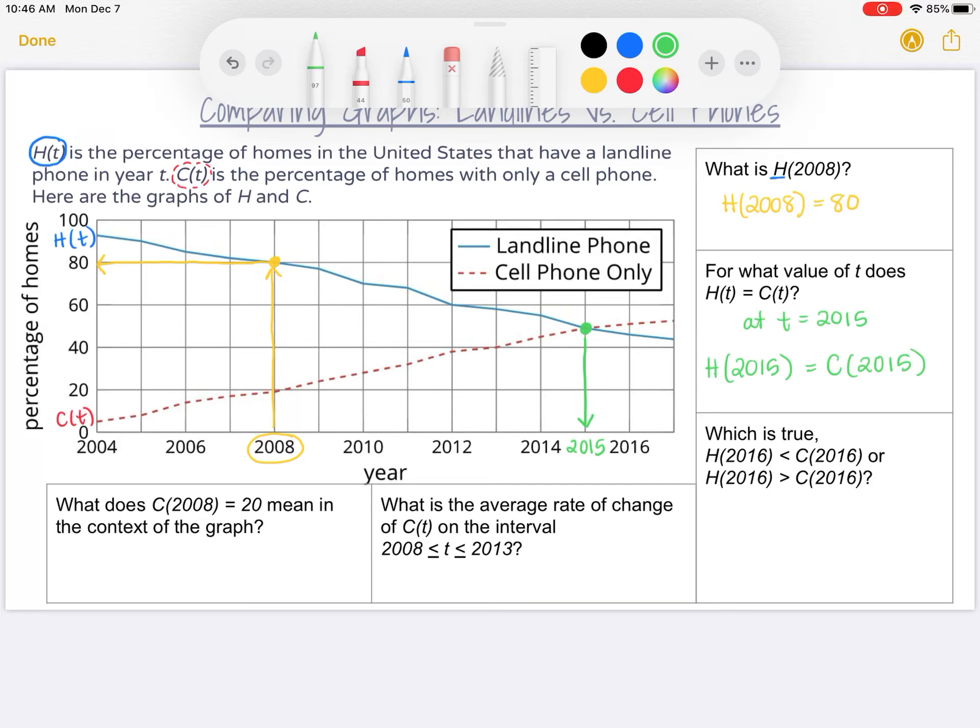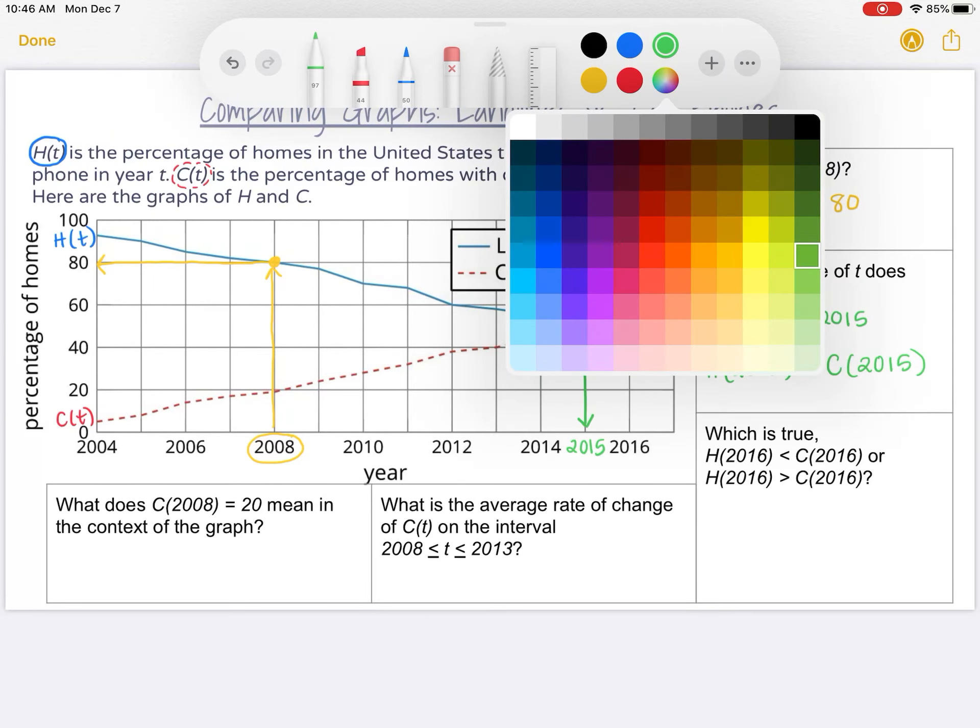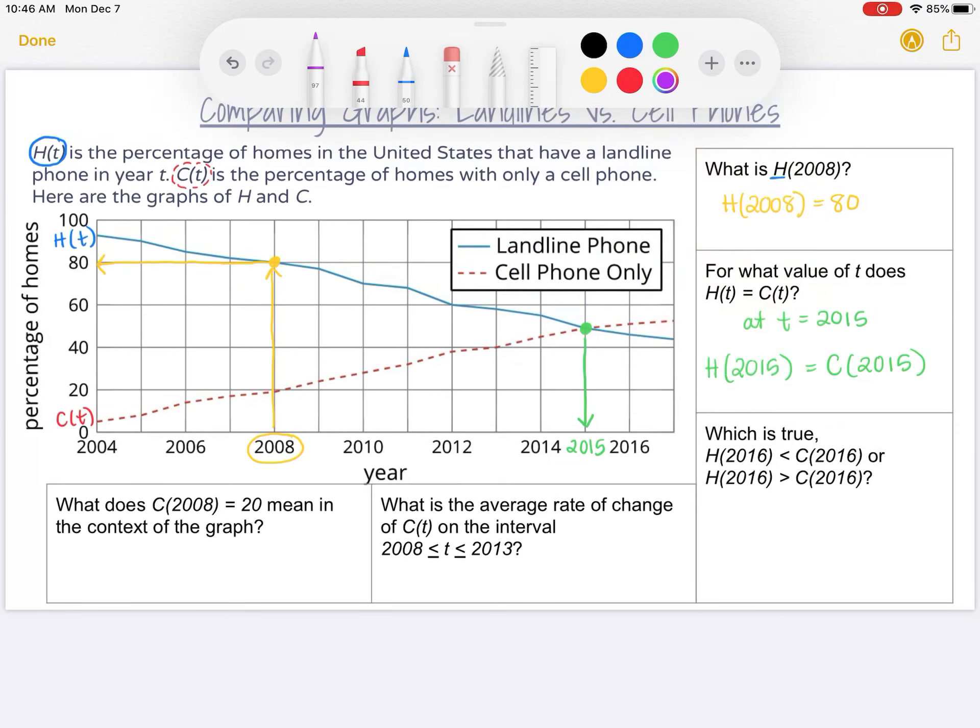My next question, if I go down one, it says which is true? H(2016) is less than C(2016) or H(2016) is greater than C(2016)? Before I get caught up with all these different symbols here, I first noticed that it's asking me to compare the percentage of homes with landlines and the percentage of homes with just cell phones in the year of 2016.